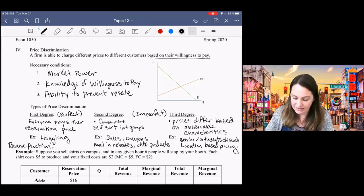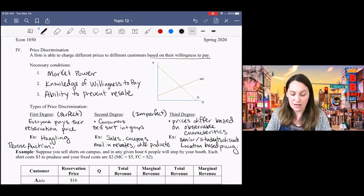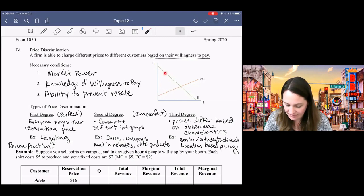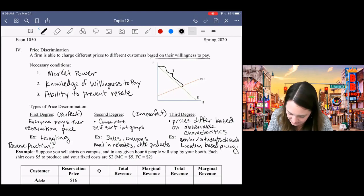Let me show you on this graph what first degree price discrimination or perfect price discrimination is going to look like. We can charge every single customer their reservation price. Where are the reservation prices on my graph? That's given by the demand curve. These are the customer reservation prices.